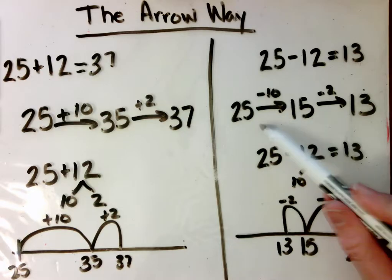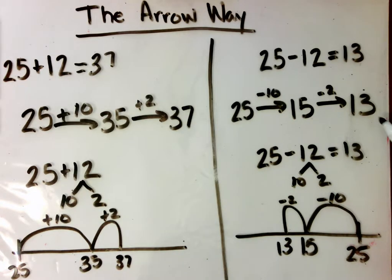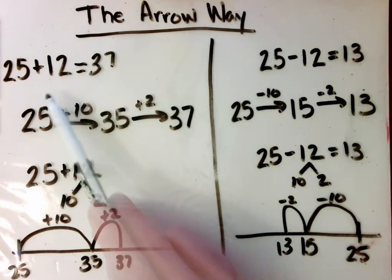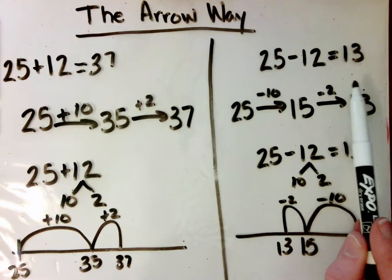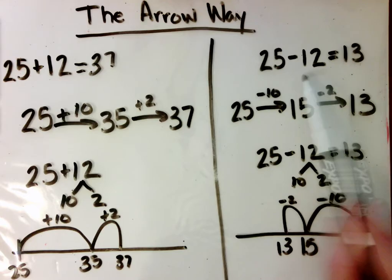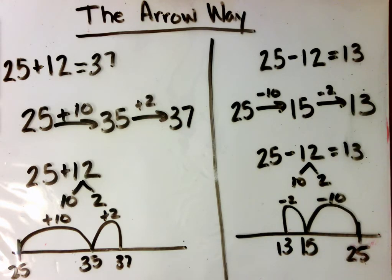As you can see, the arrow way is just one of the written methods to help us add or subtract in parts that are easier for us to think through.